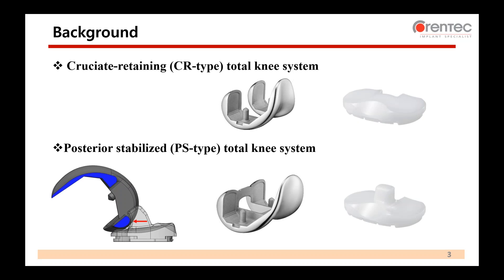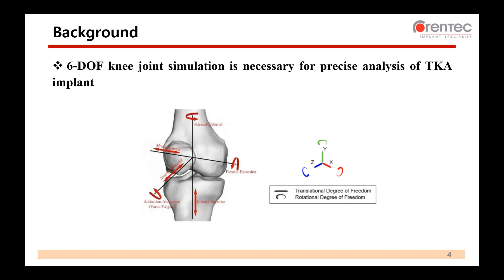Here I want to introduce two different types of total knee replacement systems regarding the cruciate ligament. CR type retains the posterior cruciate ligament. In the PS type — posteriorly stabilized — the PCL should be sacrificed. The geometry of these two types is different. In the PS type, the post of the tibial component and the cam of the femoral component constrain knee joint motion more similarly to the kinematics of a normal knee during gait and knee bend. Because the knee joint shows both translations and rotations in three anatomical axes, a six-degree-of-freedom knee joint simulation is necessary for precise analysis.